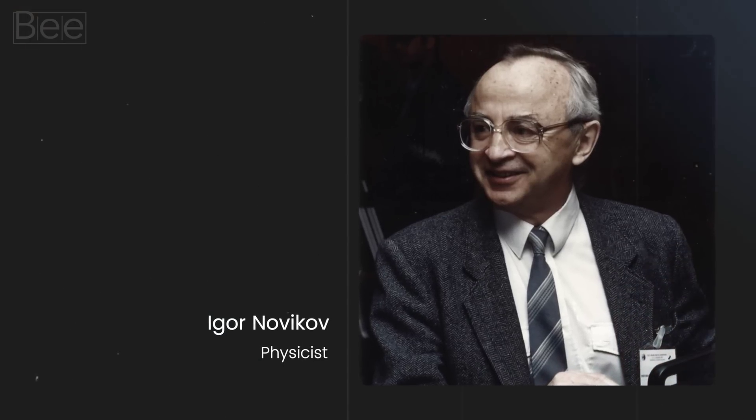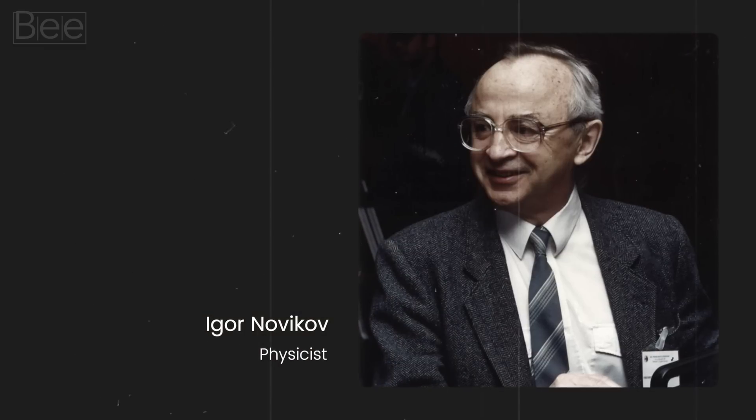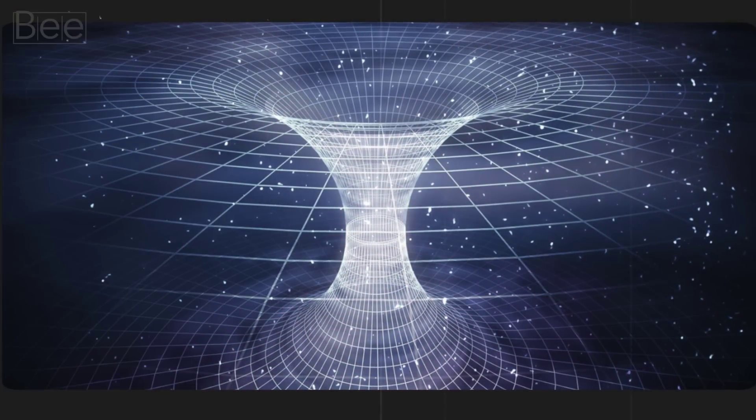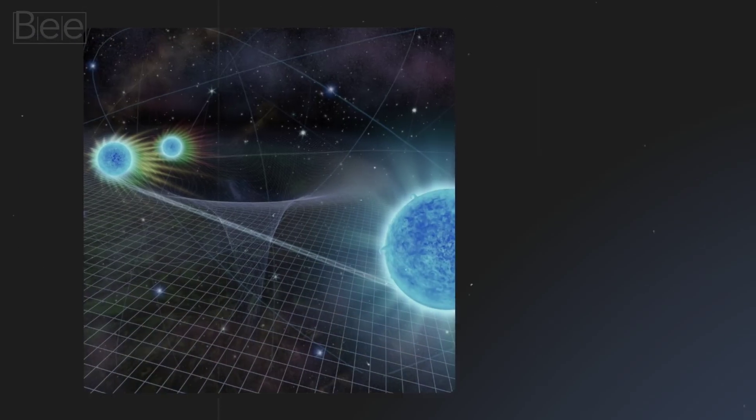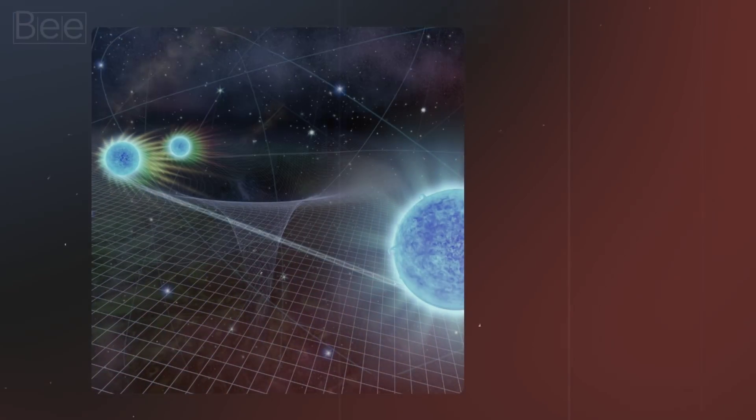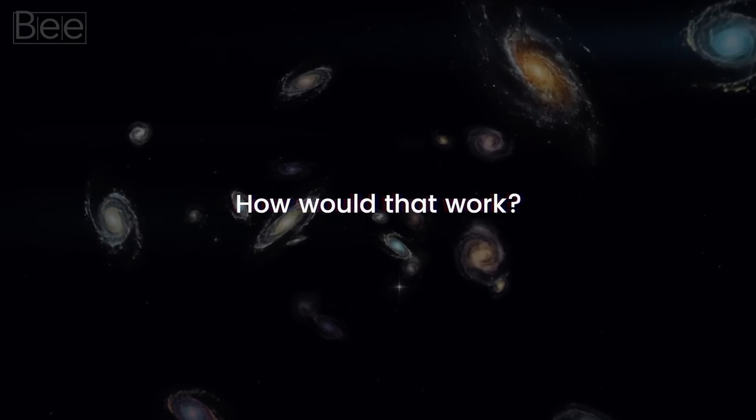In 1988, physicist Igor Novikov stated an astonishing idea about wormholes. If their existence are allowed by the laws of physics, Einstein's relativistic law would permit transforming them into some sort of time machines. But how would that work? Let's explore that statement in details.